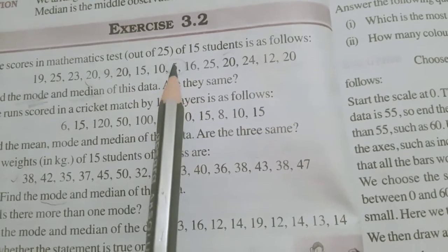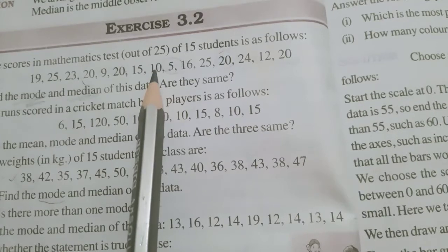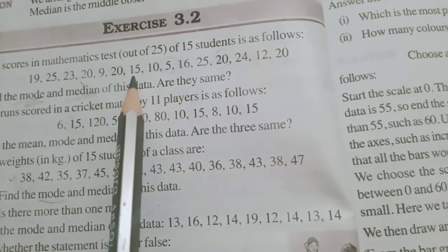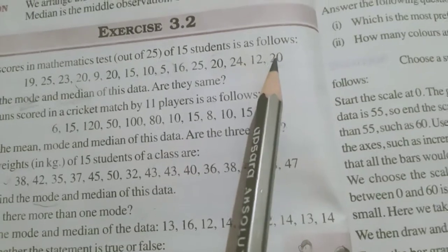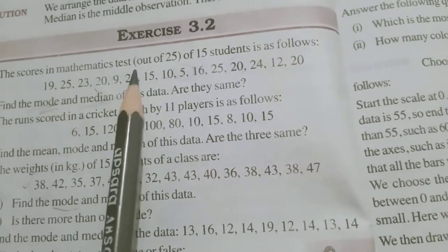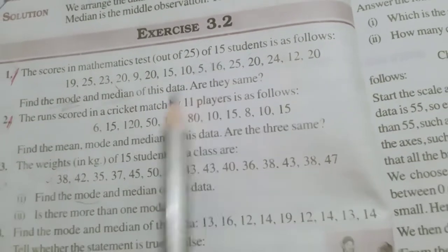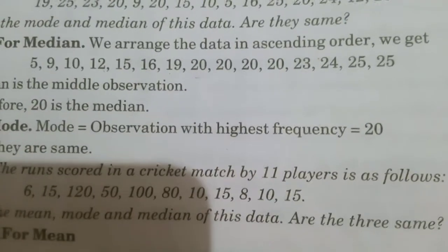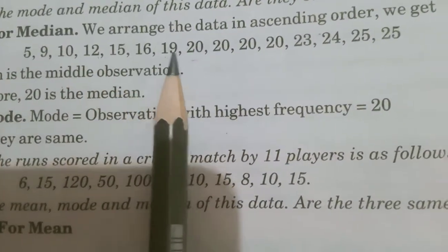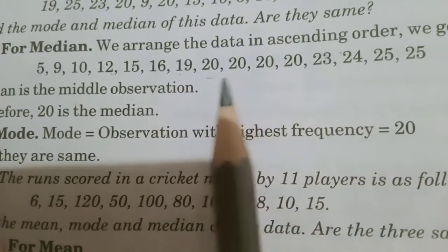Which is the smallest? 5. 5, 9. After that, 10. 10, 5, 9, 10, 12, 15, then 16. Like this way, we will arrange the data. And after arranging this data, we will find which is the term at the middle. First, how many total are there? 15 students. Means, what will the observation at 8th place? 8th place will be the median. See, data is arranged in ascending order now. 5, 9, 10, 12, 15, 16, 19, 20, 20, 20, 20, 20, 23, 24, 25, 25. Now, total 15 terms are there.